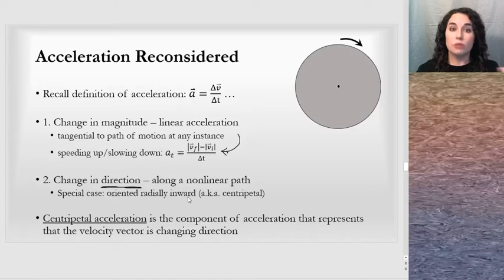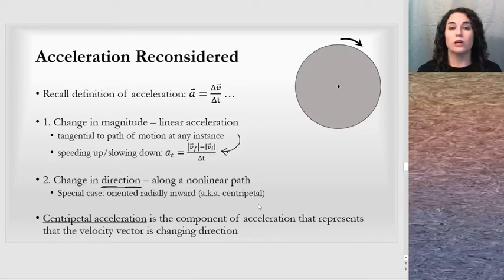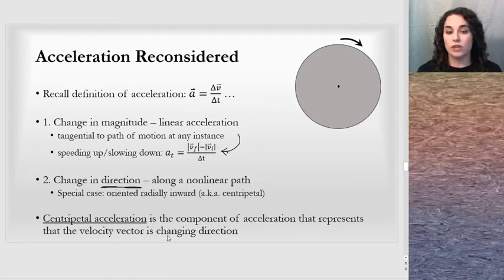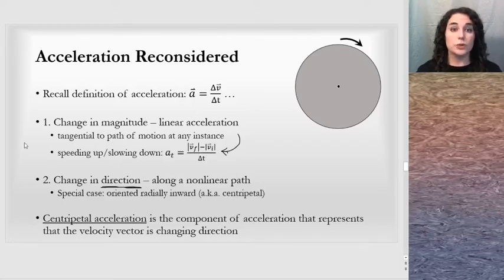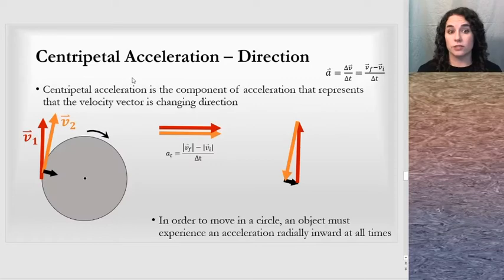The special case of moving in a circle, where we have an acceleration oriented radially inward, we call centripetal acceleration. Centripetal acceleration is the component of acceleration that represents that the velocity vector is changing direction. That velocity vector may also be changing length, but it is changing direction. We can look at the direction of centripetal acceleration in a little more detail.